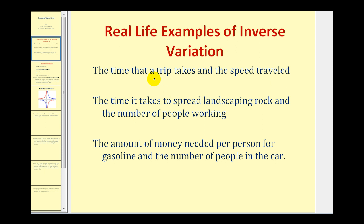Our first example: the time that a trip takes and the speed traveled would be an example of inverse variation, assuming the distance of the trip is fixed. So let's say the distance is 250 miles. Then the time T equals 250 divided by the rate R in miles per hour. If our rate is 50 miles per hour, it would take 5 hours; versus 25 miles per hour, it would take 10 hours.